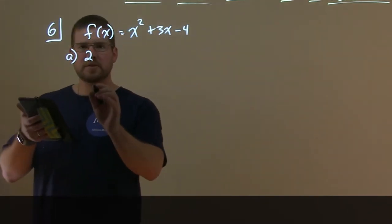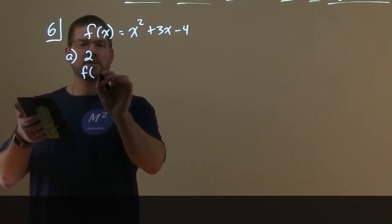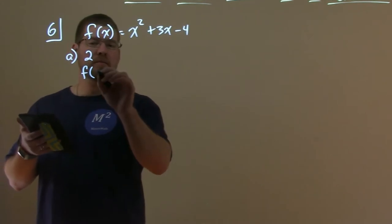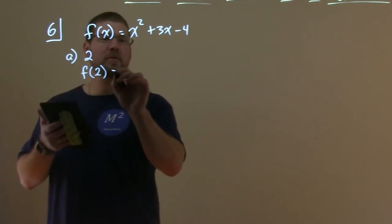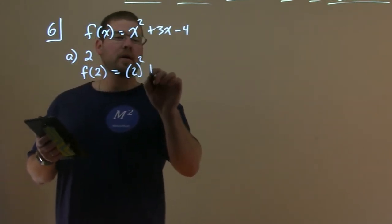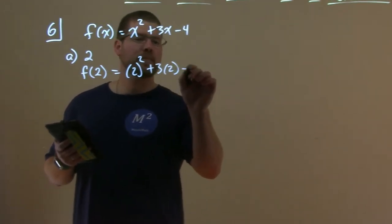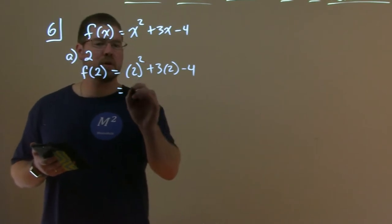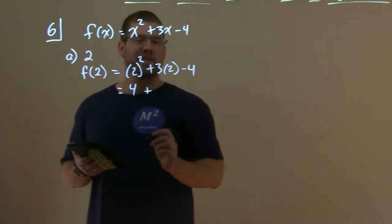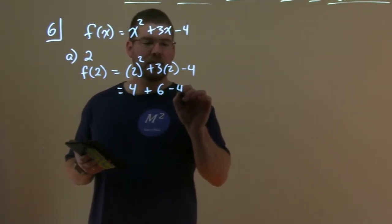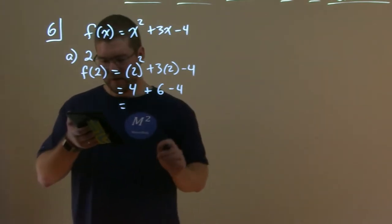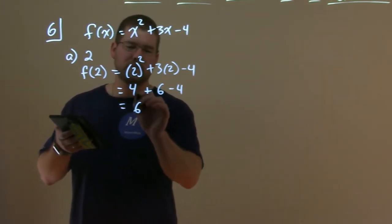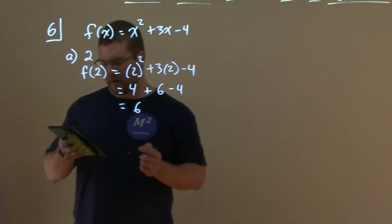If we're going to do it at 2, we take our function f(x) and put 2 in for x. f(2) equals 2 squared plus 3 times 2 minus 4. Let's simplify that. 2 squared is 4, 3 times 2 is 6 minus 4. 4 plus 6 minus 4 is 6. The 4s cancel, we're left with 6.